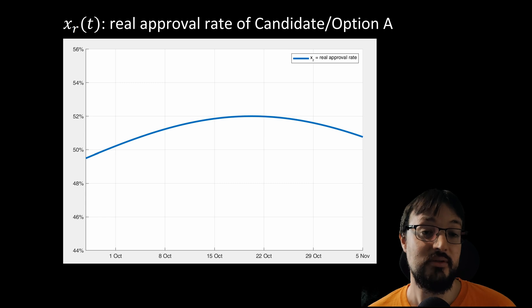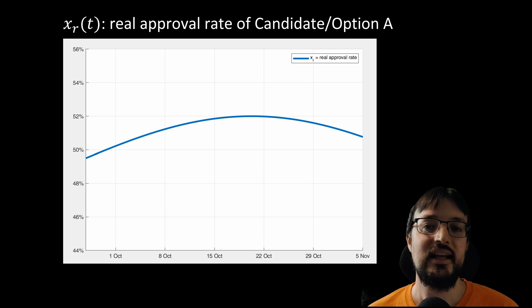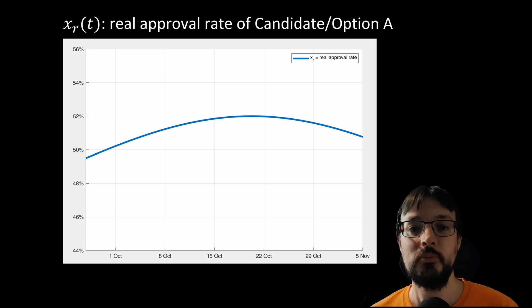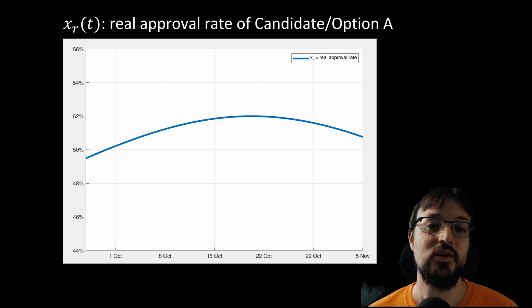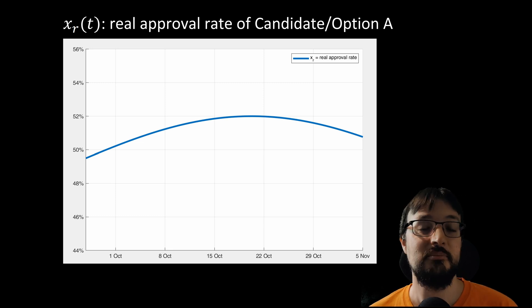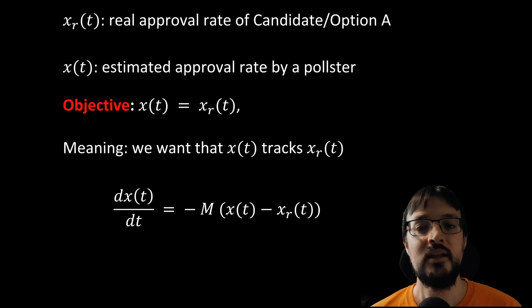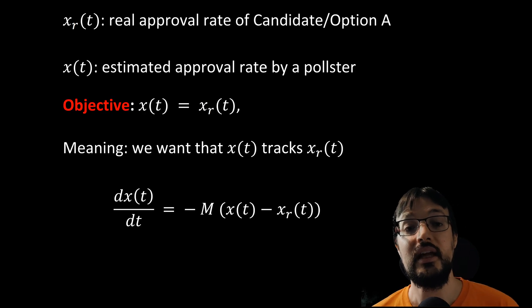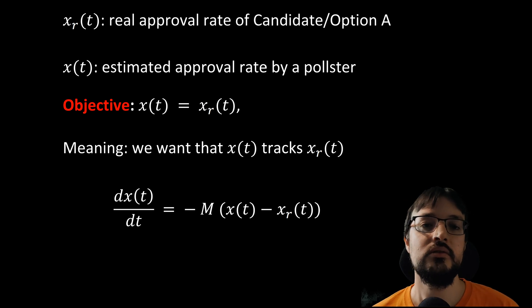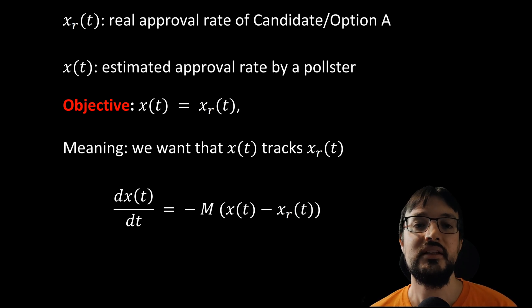Let's introduce some variables. By x_r(t) we indicate the real approval rate of candidate or option A as a function of time. For instance, x_r of 22 October indicates the approval rate on the 22nd of October that in this graph is about 52%. This information is unknown to the pollster. Then by x(t) we indicate the estimated approval rate by a pollster. Obviously the pollster wants to achieve the objective that x(t) is equal to x_r(t), meaning that they want that x(t) tracks x_r(t).